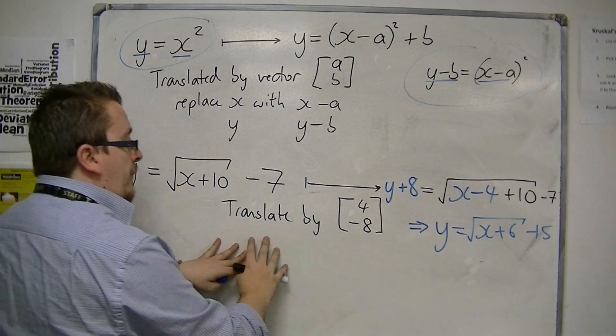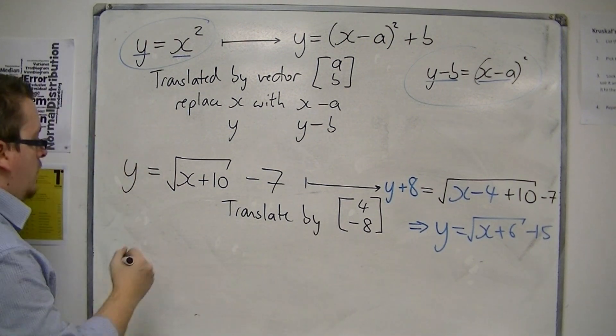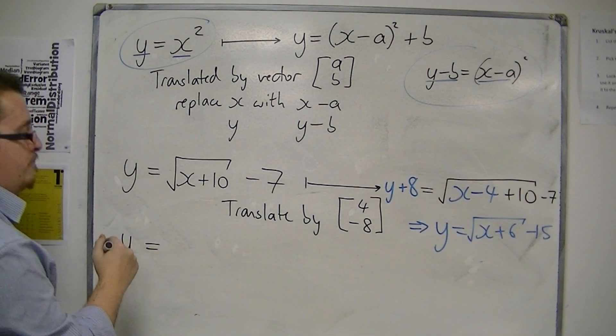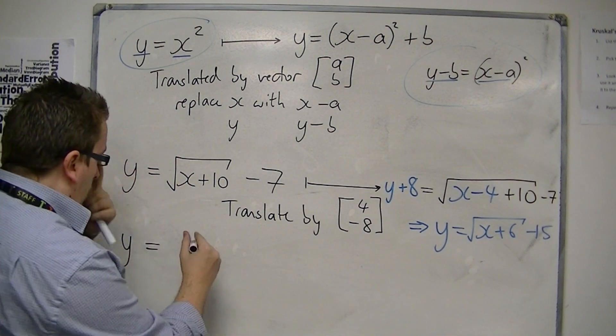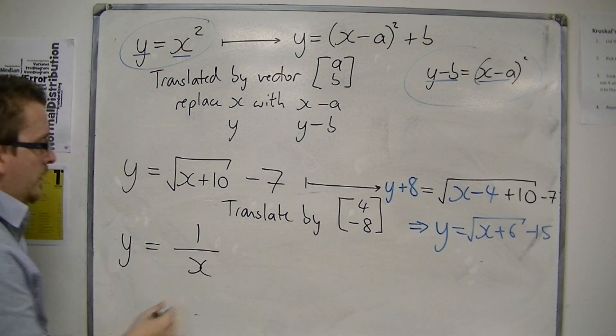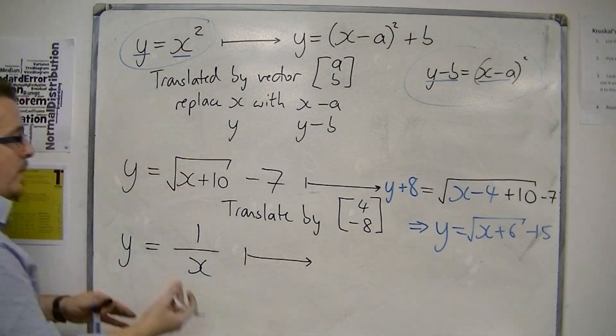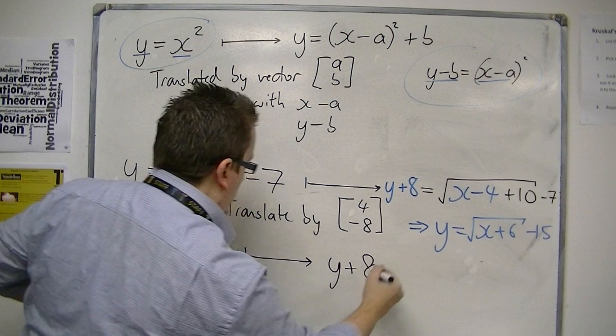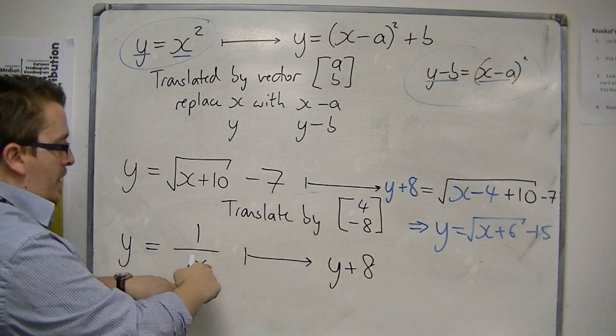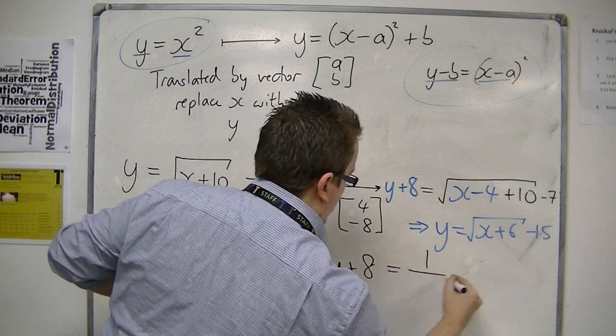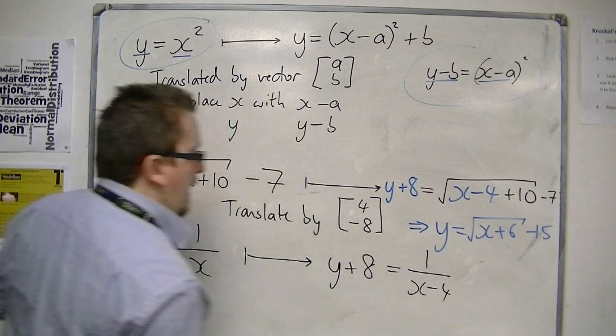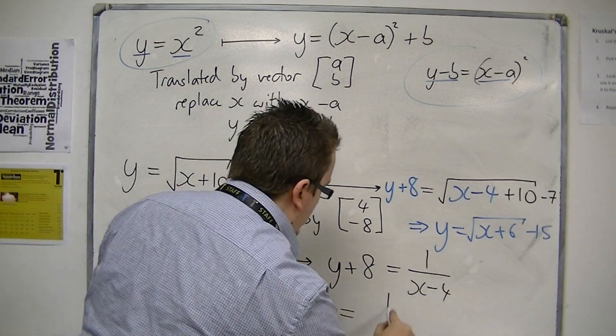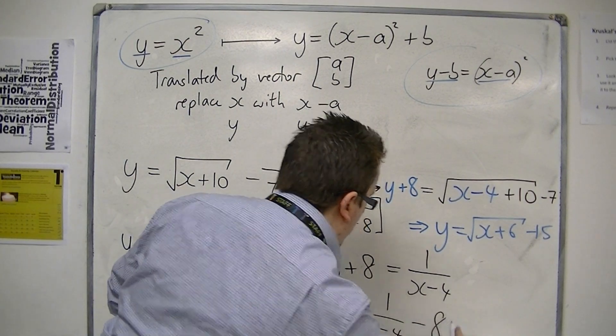If you're going to do the same translation to something like y equals 1 over x, then replace the y with y plus 8, replace the x with x minus 4, and then just by taking 8 from both sides, you can get y equals again, like so.